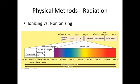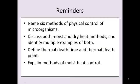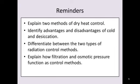Alright, that's it for the first half of Chapter 7. Stretch, take a break, think about something else, come back and we'll talk about chemical control methods. Well, that's it for this topic. As a reminder of what the learning objectives for this topic were, you should be able to name six methods of physical control of microorganisms, discuss both moist and dry heat methods, and identify multiple examples of both, define thermal death time and thermal death point, explain methods of moist heat control, explain two methods of dry heat control, identify advantages and disadvantages of cold and desiccation, differentiate between the two types of radiation control methods, and explain how filtration and osmotic pressure function as control methods.